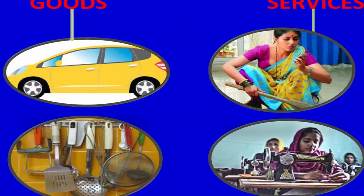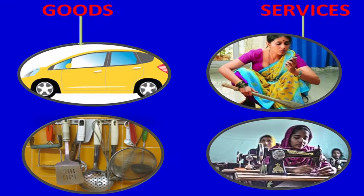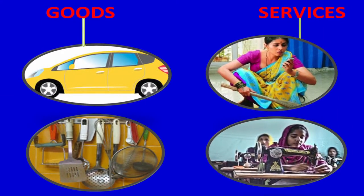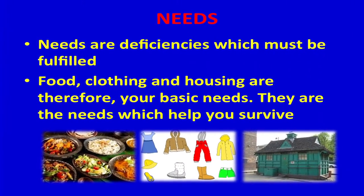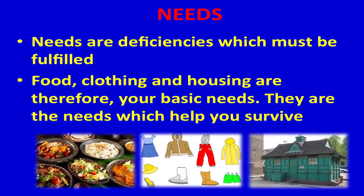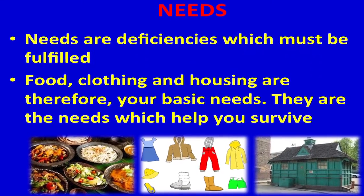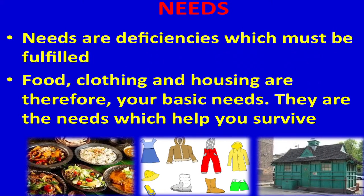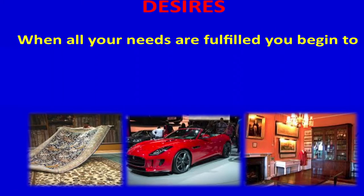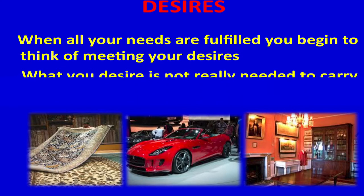These are the different goods — for example, a car — and these are the different services. Needs are deficiencies which must be fulfilled. Food, clothing, and housing are your basic needs; they are the needs which help you survive. Desires: when all your needs are fulfilled, you begin to think of meeting your desires.